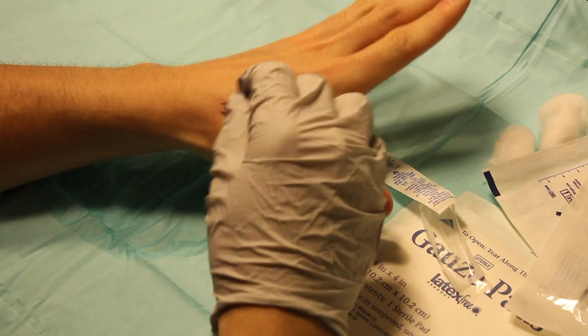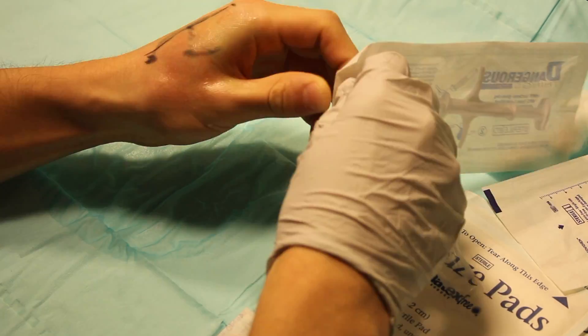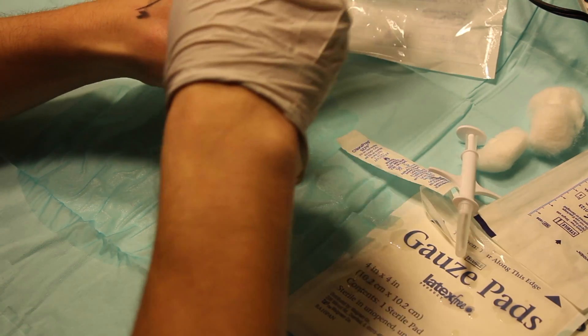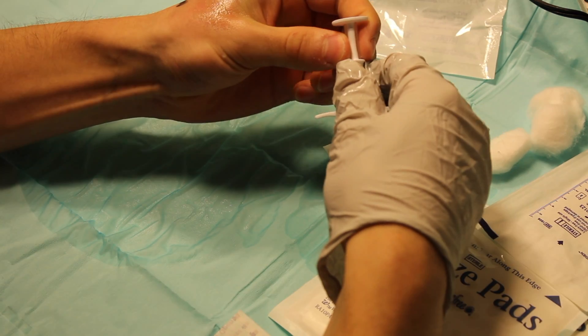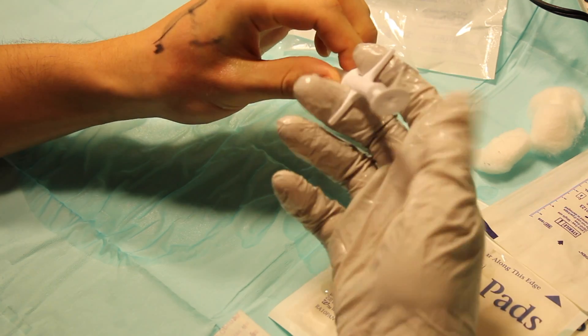Then I disinfected the skin with some alcohol and chloroprep. I was pretty nervous at this point but I pulled the injection assembly out of the package, gave a final rinsing with the chloroprep, I pulled out the retaining tag on the injection assembly, took the cap off the needle, and I was ready to go.